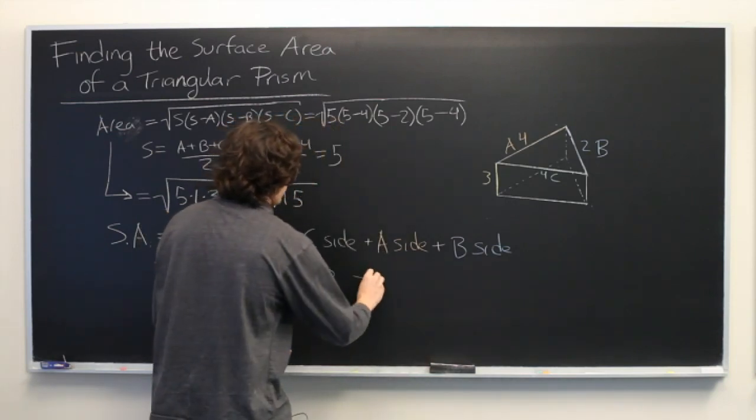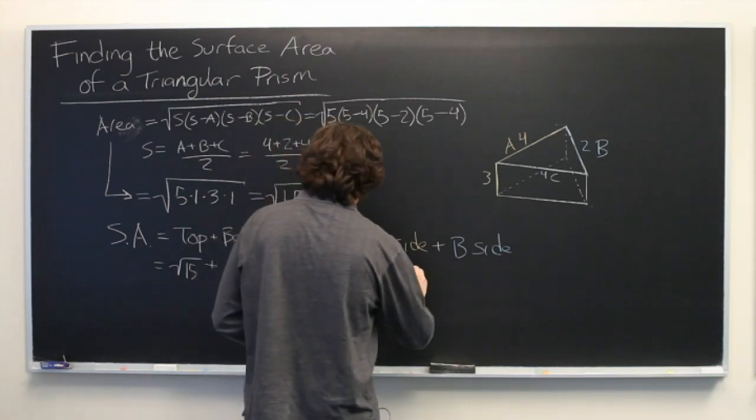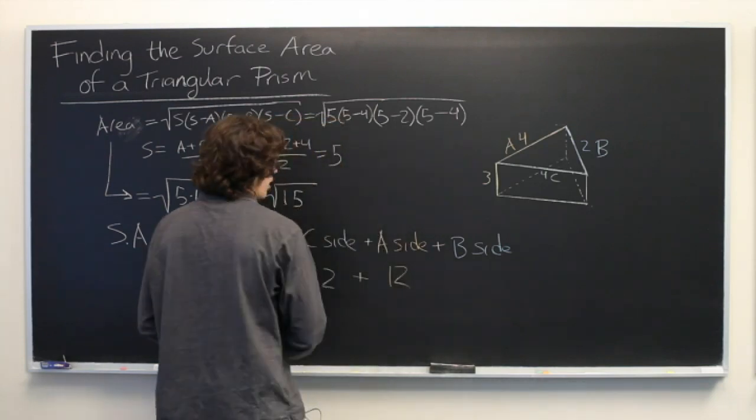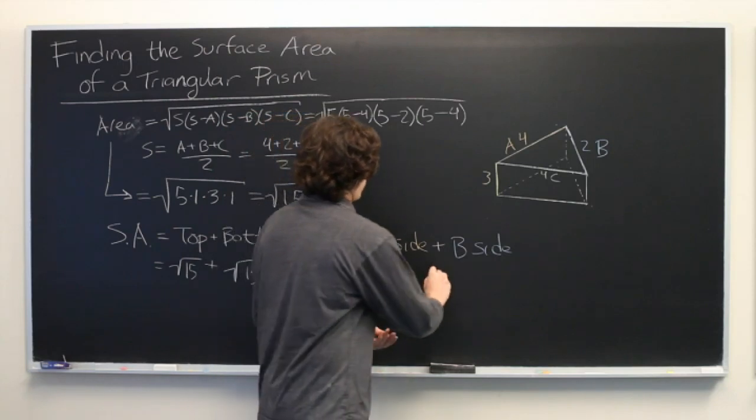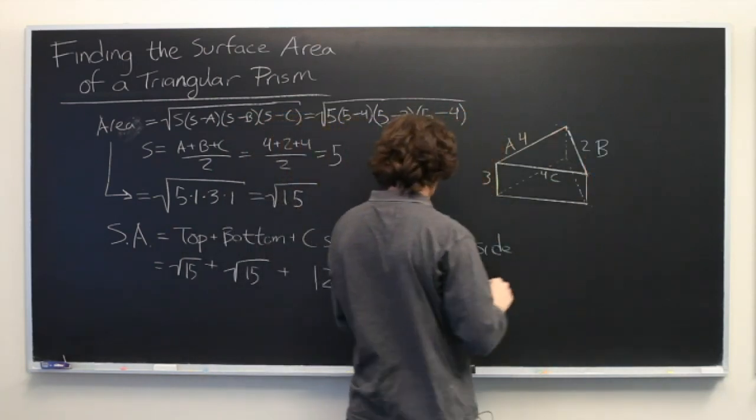Now we need to add the A side, which is also 4 times 3, so we get 12 again. And finally, the B side, which is a length of 2 times the height of 3, which is 6.